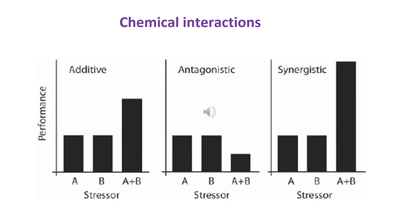Another phenomenon to consider is chemical interactions between different toxins. If toxin A and toxin B are both present in a water source or soil, they can have an additive effect — where the combined impact equals the sum of each toxin's individual effect. They can also have an antagonistic effect, where one toxin reduces the overall effect of the other. Synergistic effects occur when both toxins together cause a much greater effect than either one singly — more than just additive.